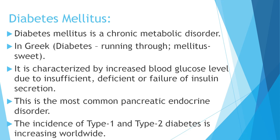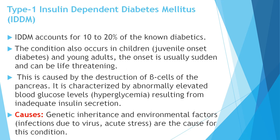Diabetes mellitus is increasing worldwide and it is of two types: Type 1 and Type 2. Type 1 Diabetes mellitus is called Insulin Dependent Diabetes mellitus (IDDM) and accounts for about 10 to 20% of total diabetic patients. Also called juvenile onset diabetes, it occurs in children and young adults. The onset is usually sudden and can be life-threatening. It is caused due to the destruction of the beta cells of the pancreas.